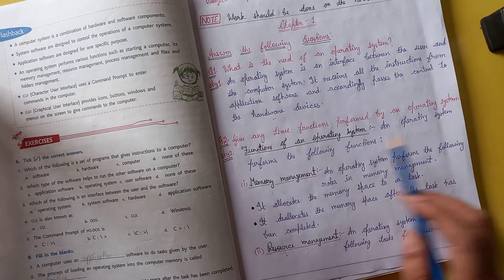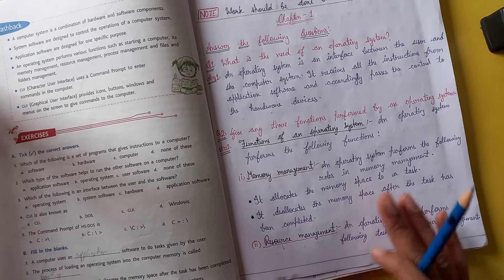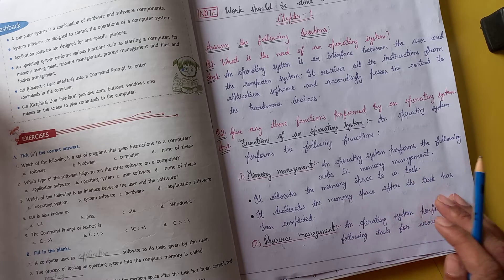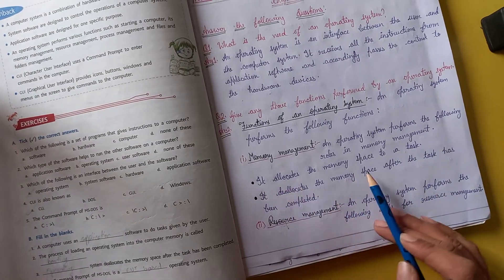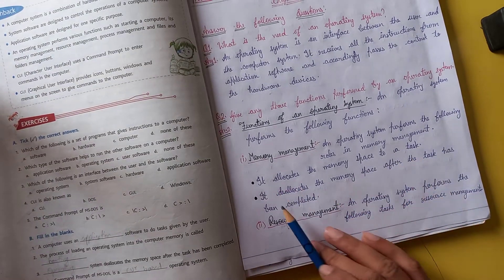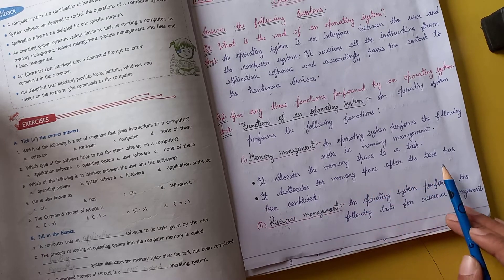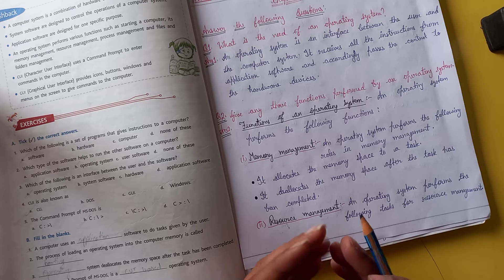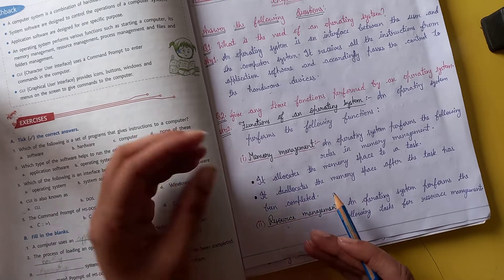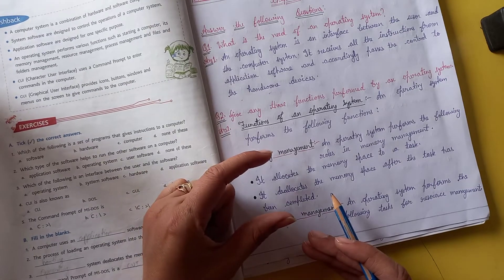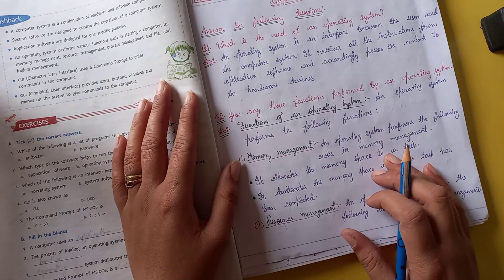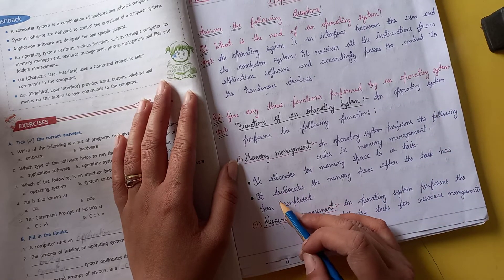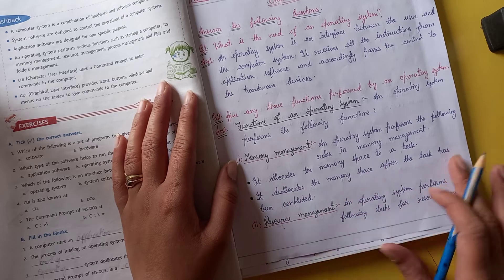Second question: give any three functions performed by an operating system. First is memory management. The operating system allocates memory space to a task and deallocates the memory space after the task has been completed. For example, when you open Paint, it allocates memory; when you save and close Paint, it deallocates that memory.